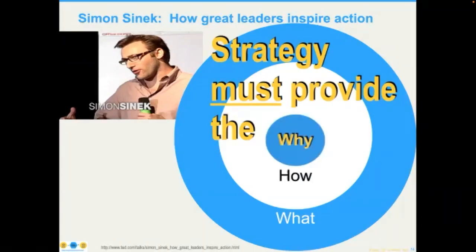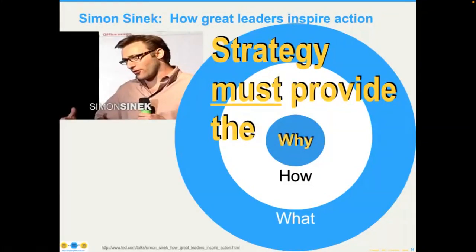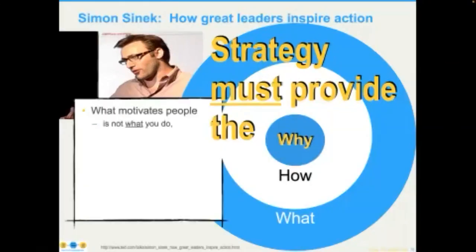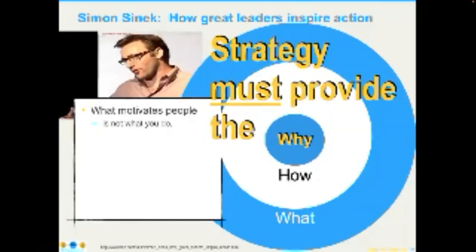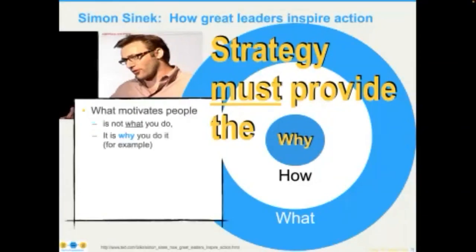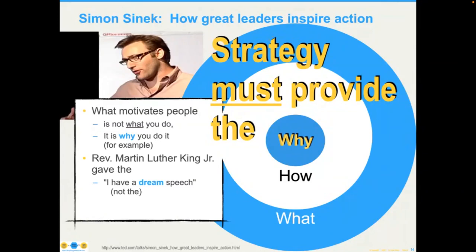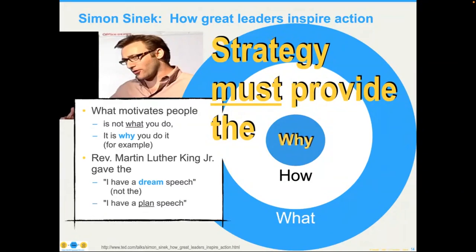Human beings are pretty good at describing what it is that we do. We're less good at describing how we actually do it. And we're quite frankly not very good at describing why we do it. Strategy is the thing that provides that 'why.' People don't care what you do — it's why you do it. As Sinek illustrated, Reverend Martin Luther King didn't give the 'I Have a Plan' speech — he gave the 'I Have a Dream' speech. Those are two completely different things.